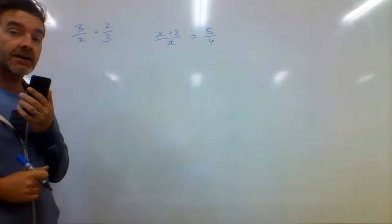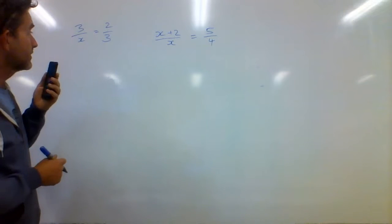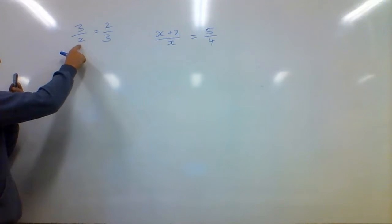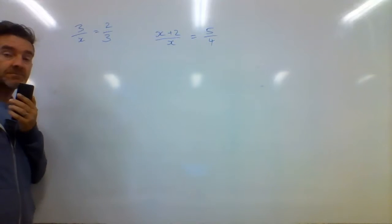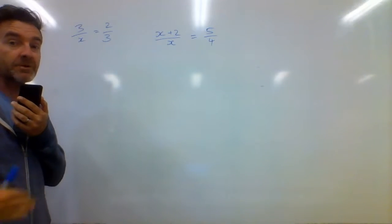We are going to cross-multiply the heck out of these and then we're going to work them out. So the fact that this X is on the bottom doesn't really mean much, it just means we cross-multiply and then it will be at the top.